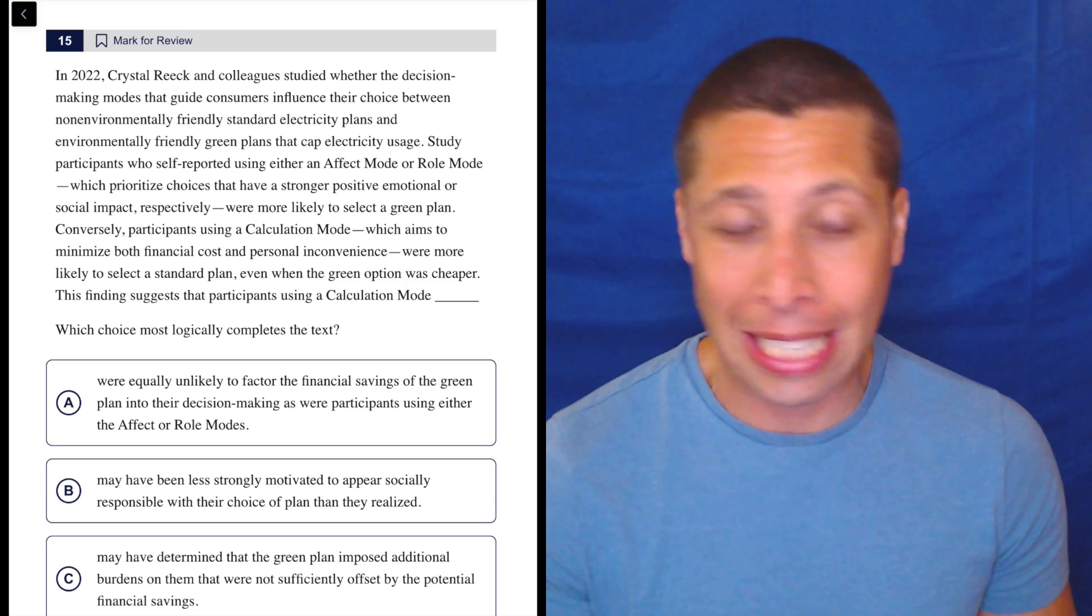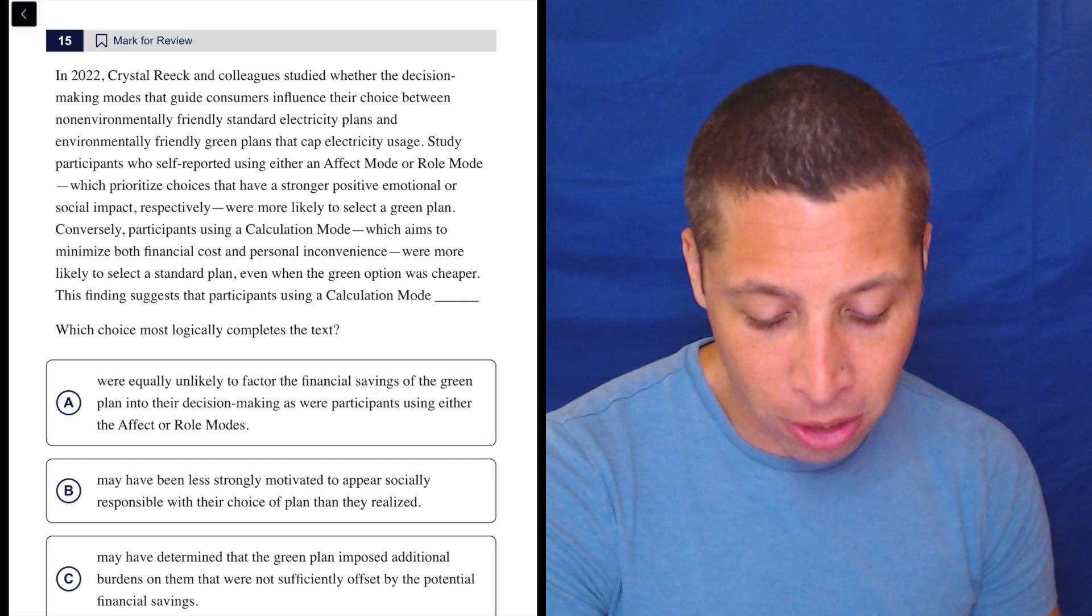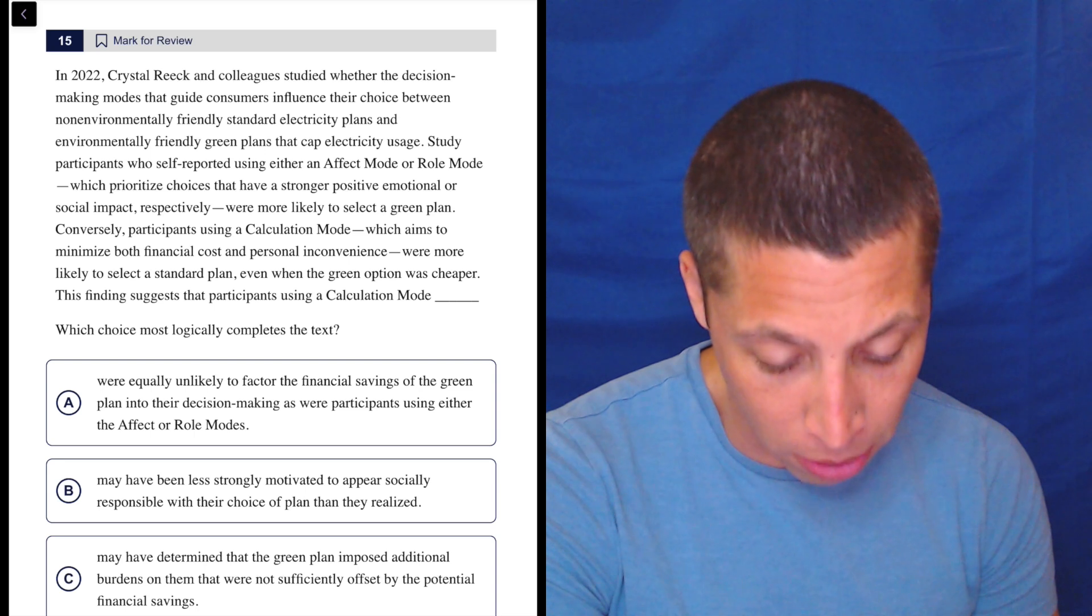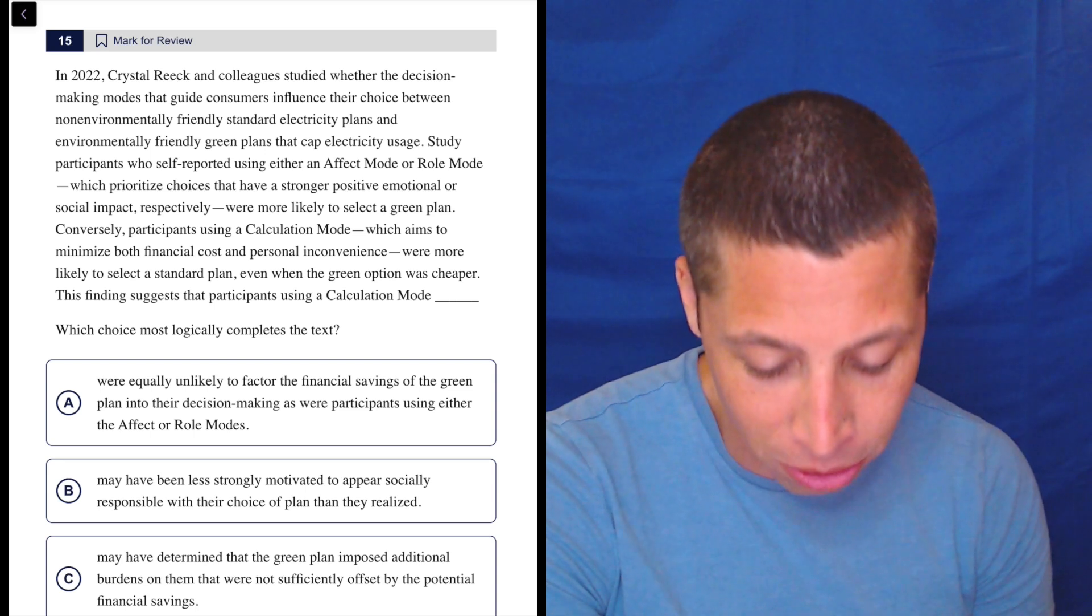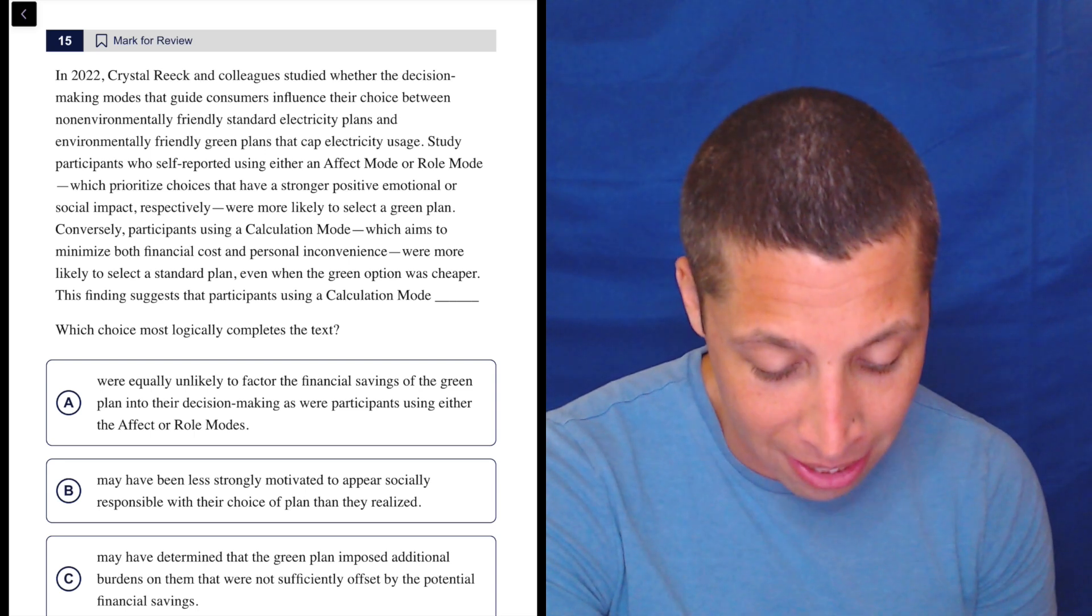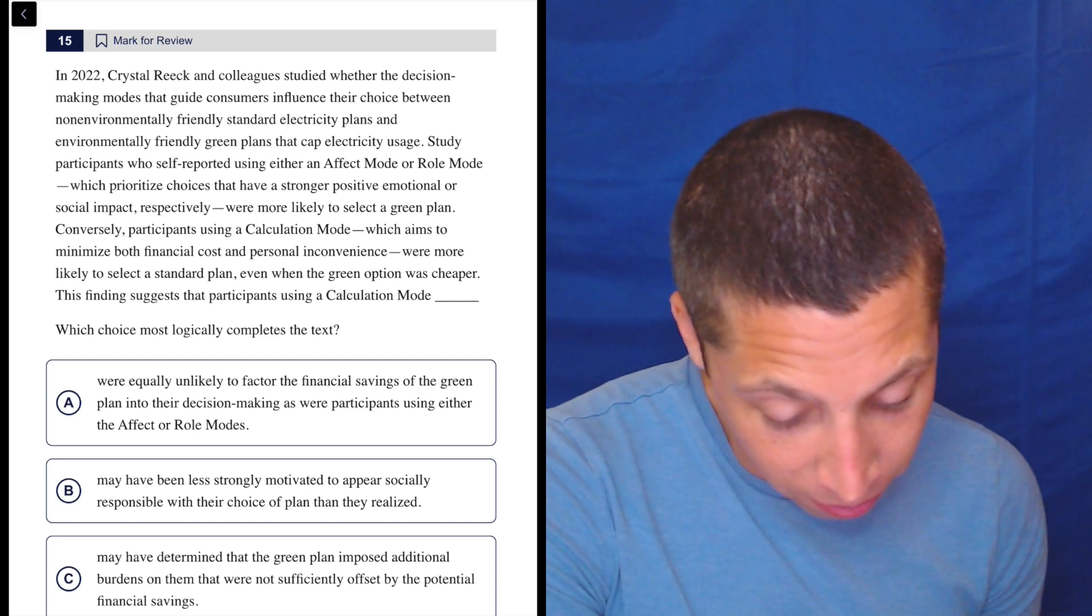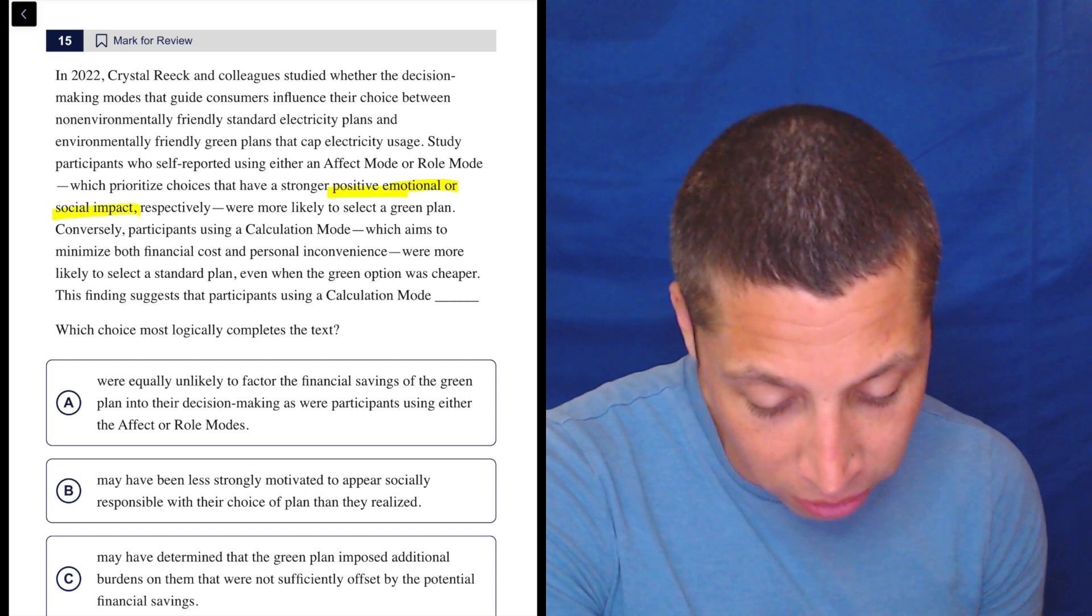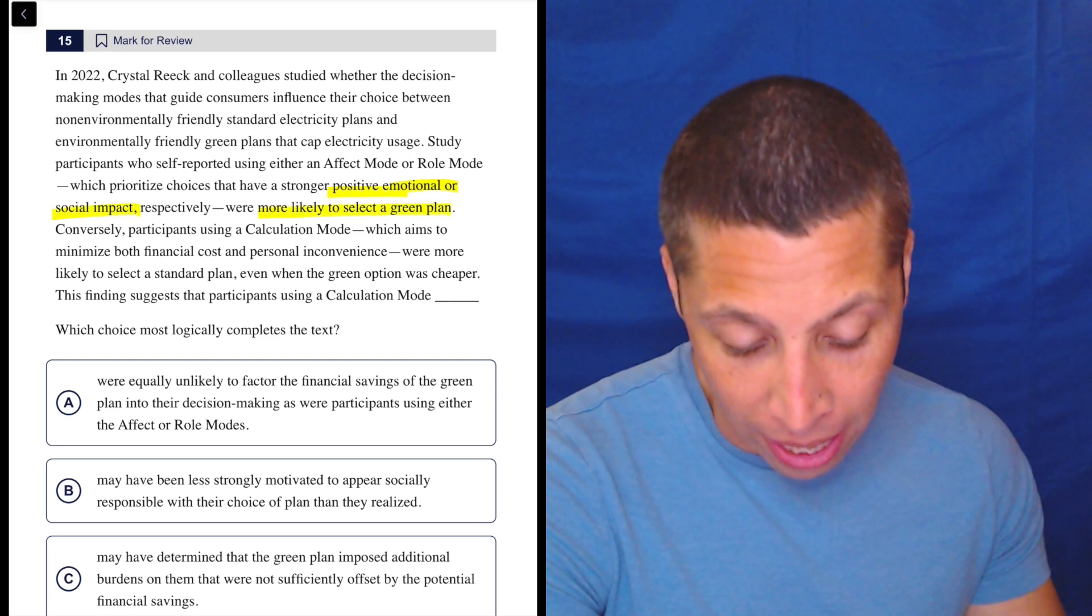Study participants who self-reported using either an affect mode or role mode, which prioritize choices that have a stronger positive emotional or social impact respectively, were more likely to select a green plan. So emotional or positive emotional or social impact are more likely to select a green plan. That's what I got.